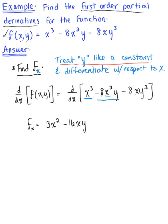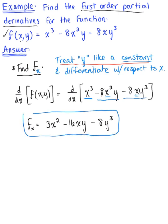Last but not least, we have -8xy³. Again, y³ is a constant here. The derivative of x is 1, so we have -8 times 1, or just -8y³. And there we have it — this is the partial derivative of the function with respect to x: 3x² - 16xy - 8y³.